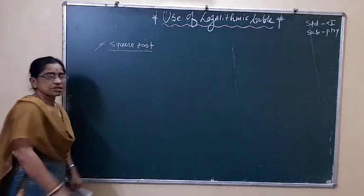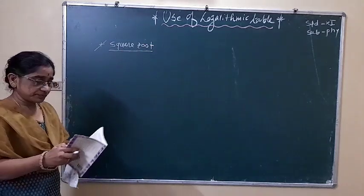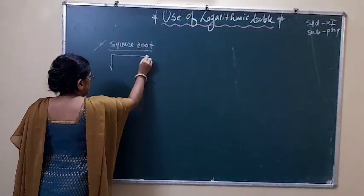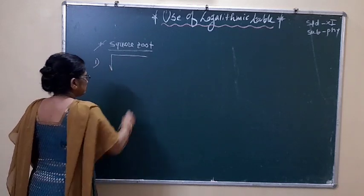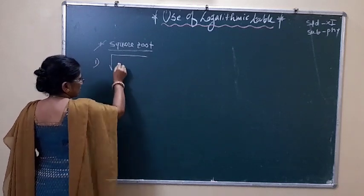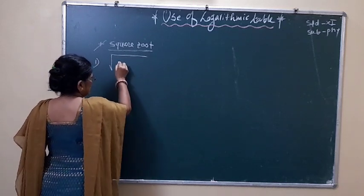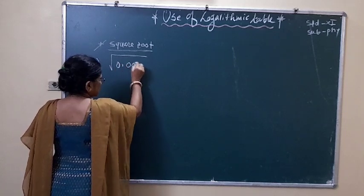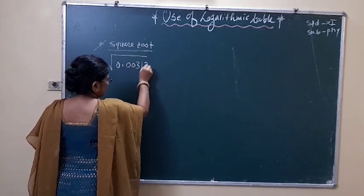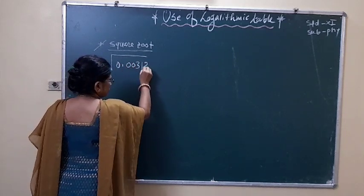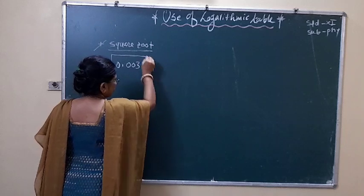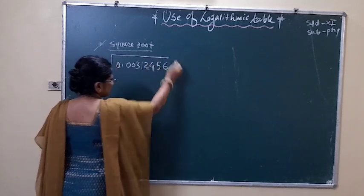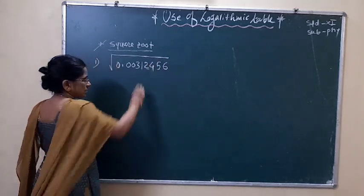Directly we have to see the table. Example: 0.00312456. This is the number.